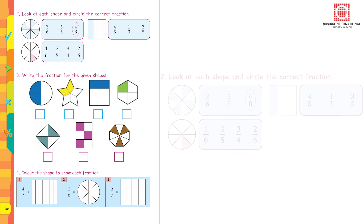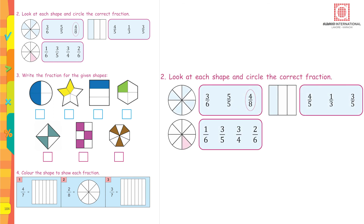On page 104, look at each shape and circle the correct fraction. Count how many parts the first circle is divided into: one, two, three, four, five, six, seven, eight — eight equal parts. The answer has eight in the denominator. Now count the colored parts: one, two, three, four — four are colored, so we write it as four upon eight and read it as four-eighths.